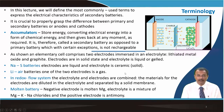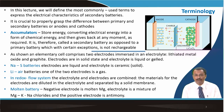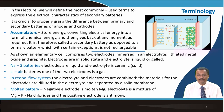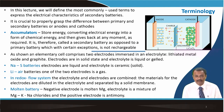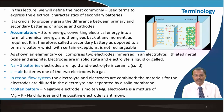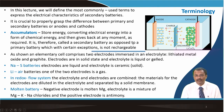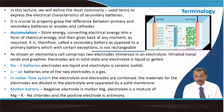In a lithium-air battery, one of the two electrodes is gaseous. In the redox flow battery, the electrolyte and electrode are combined — the electrode materials are diluted in the electrolyte and separated by a solid membrane. In a molten battery, the negative electrode is molten magnesium, the electrolyte is a mixture of magnesium, potassium, and sodium chloride, and the positive electrode is antimony, also under molten conditions. Throughout this course, we will confine ourselves to solid electrodes and either gel or liquid electrolytes.